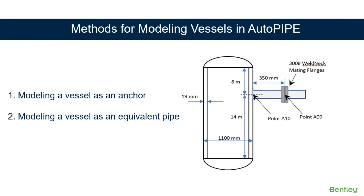In this course, we'll look at two methods for modeling vessels in AutoPipe. First, modeling a vessel as an anchor. And second, modeling a vessel as an equivalent pipe.